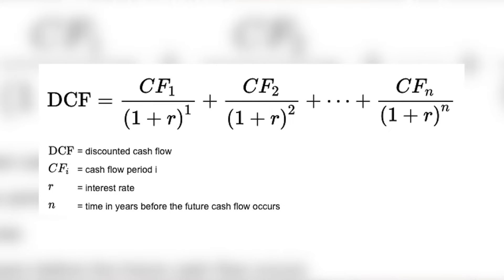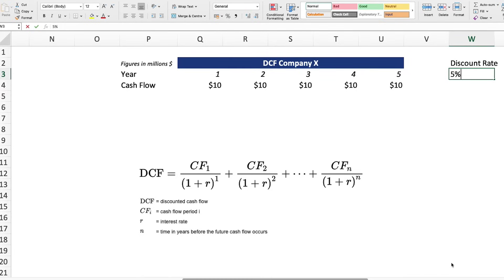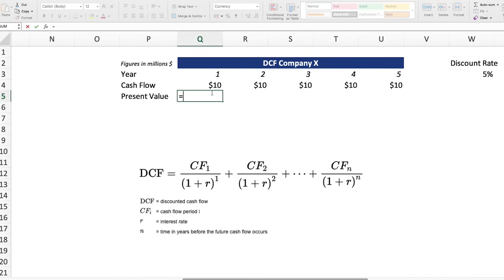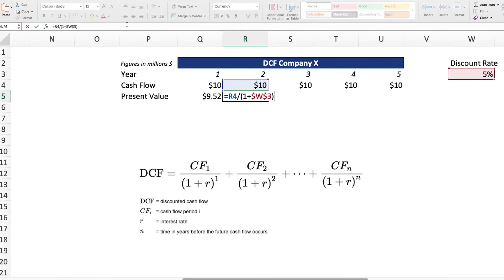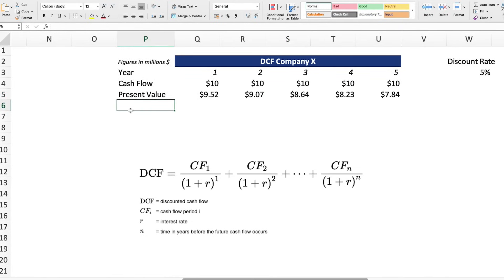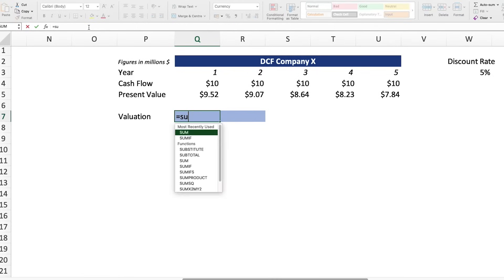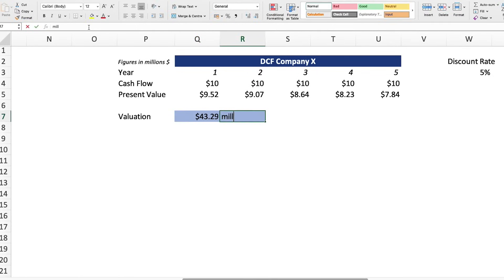We discount using a discount rate, and the formula looks like this: CF divided by (1 + r) to the power of n, where CF is the cash flow, r is the discount rate, and n is the number of periods — in this case, years. Using a discount rate of 5%, year one would be $10 million over (1 + 5%), year two would be divided by (1 + 5%) squared, year three cubed, and so on. Once you discount all of them back to the present and sum them together, you get a valuation — in this case $23.29 million.